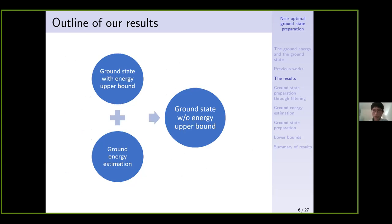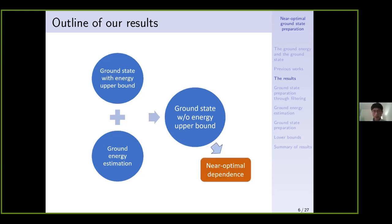In this talk I will present three algorithms. The first shows how to prepare the ground state when we have a sufficiently tight upper bound of the ground energy. The second estimates the ground energy. The third combines the previous two to prepare the ground state without needing that upper bound. The query complexities of the first and third algorithms are basically the same despite assuming different prior knowledge, and they have near-optimal dependence on the parameters gamma and delta.